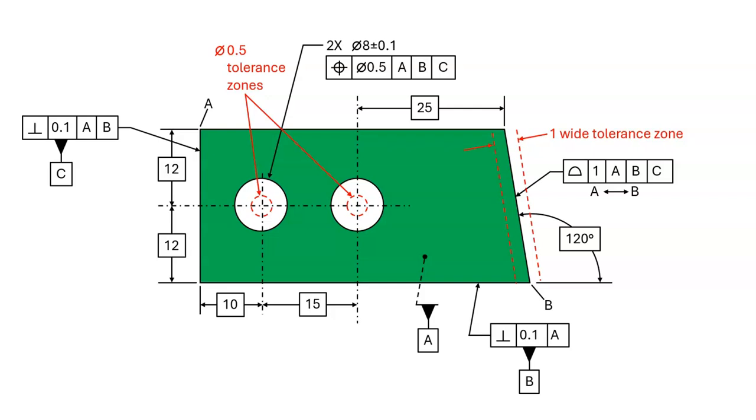The tolerance zones remain centered their exact distances from datum C. The tolerance zones are located by the basic dimensions. The holes and the surface are located by the tolerance zones.